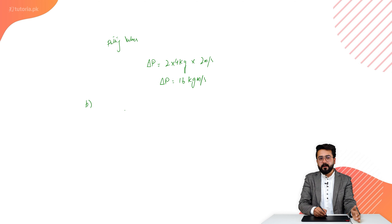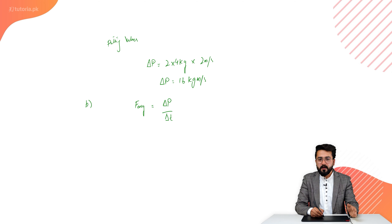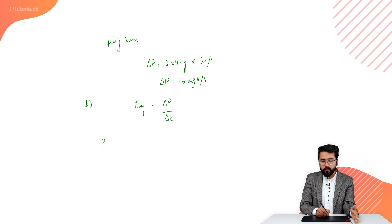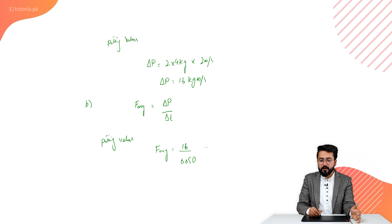In part B, we find the force using Newton's law relating force to momentum. The average force is equal to delta P over delta T. By putting in the values, we get average force equal to 16 divided by 0.050.